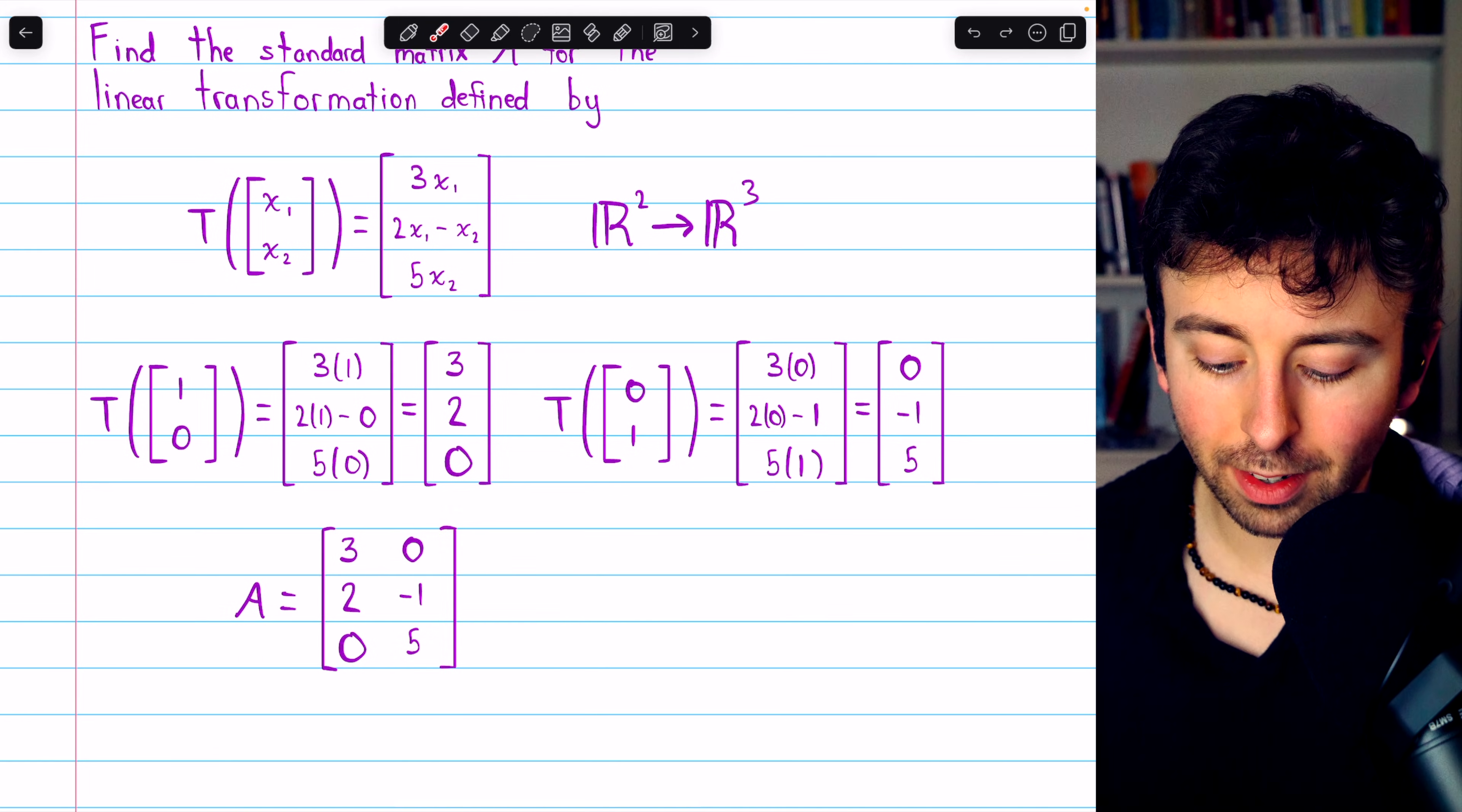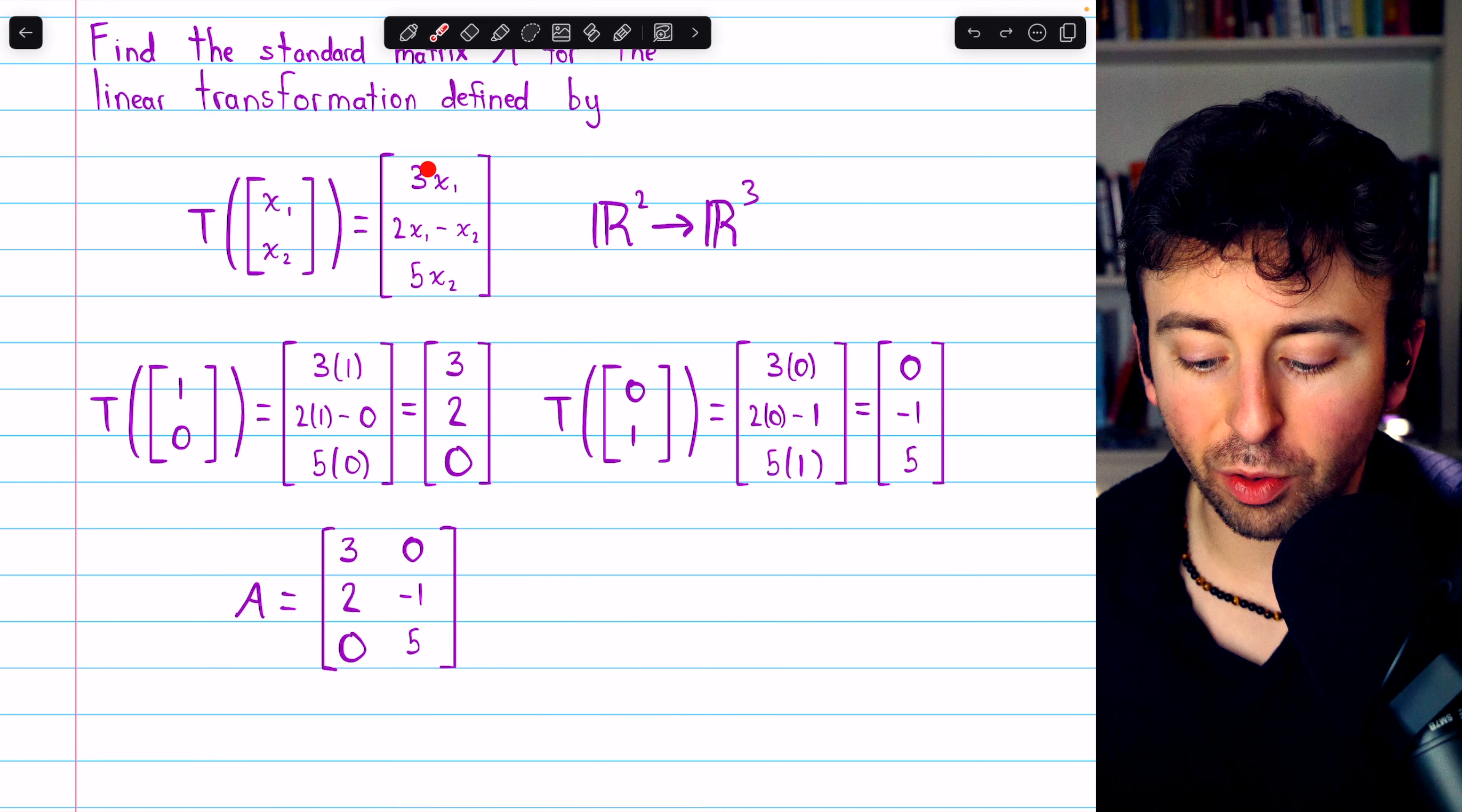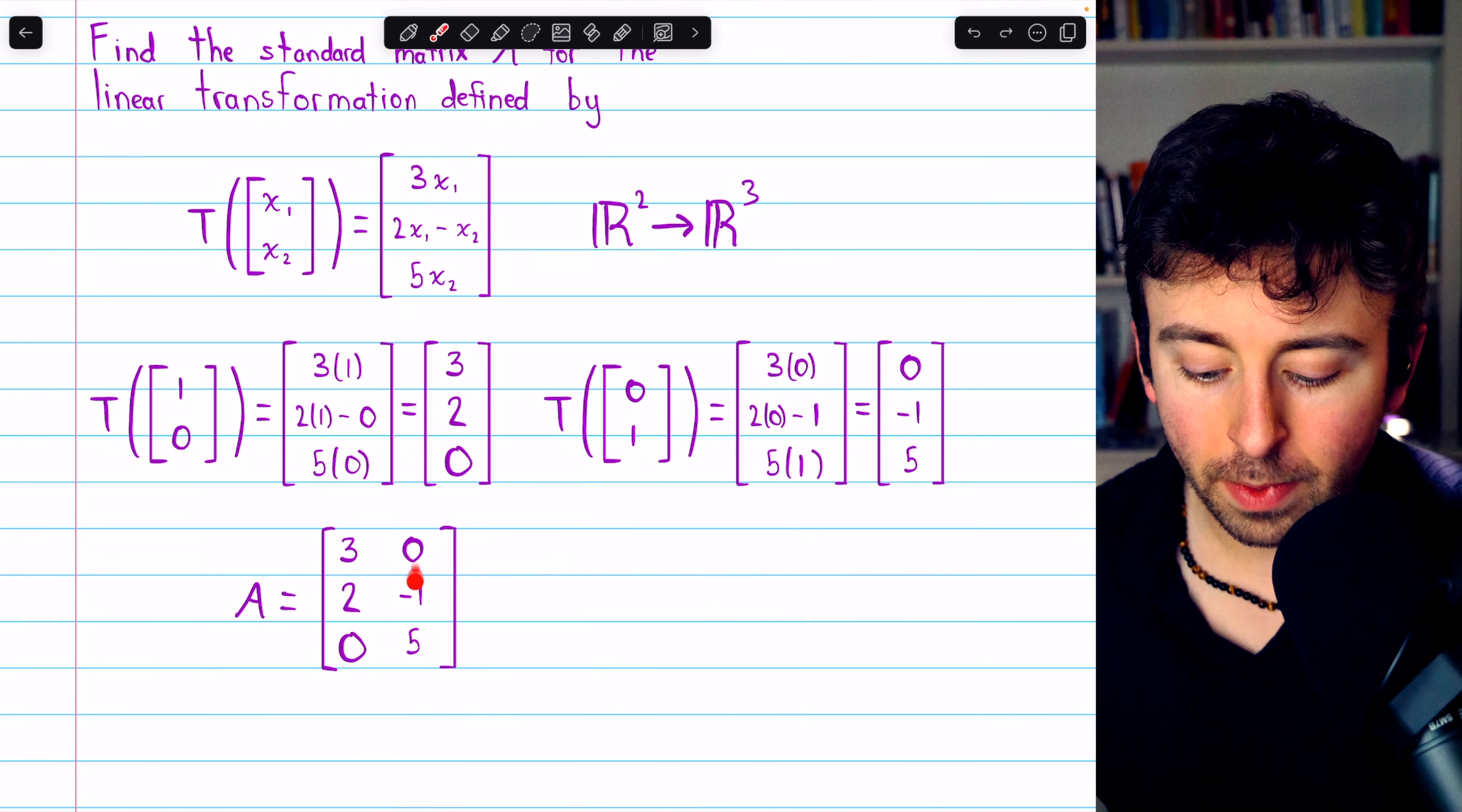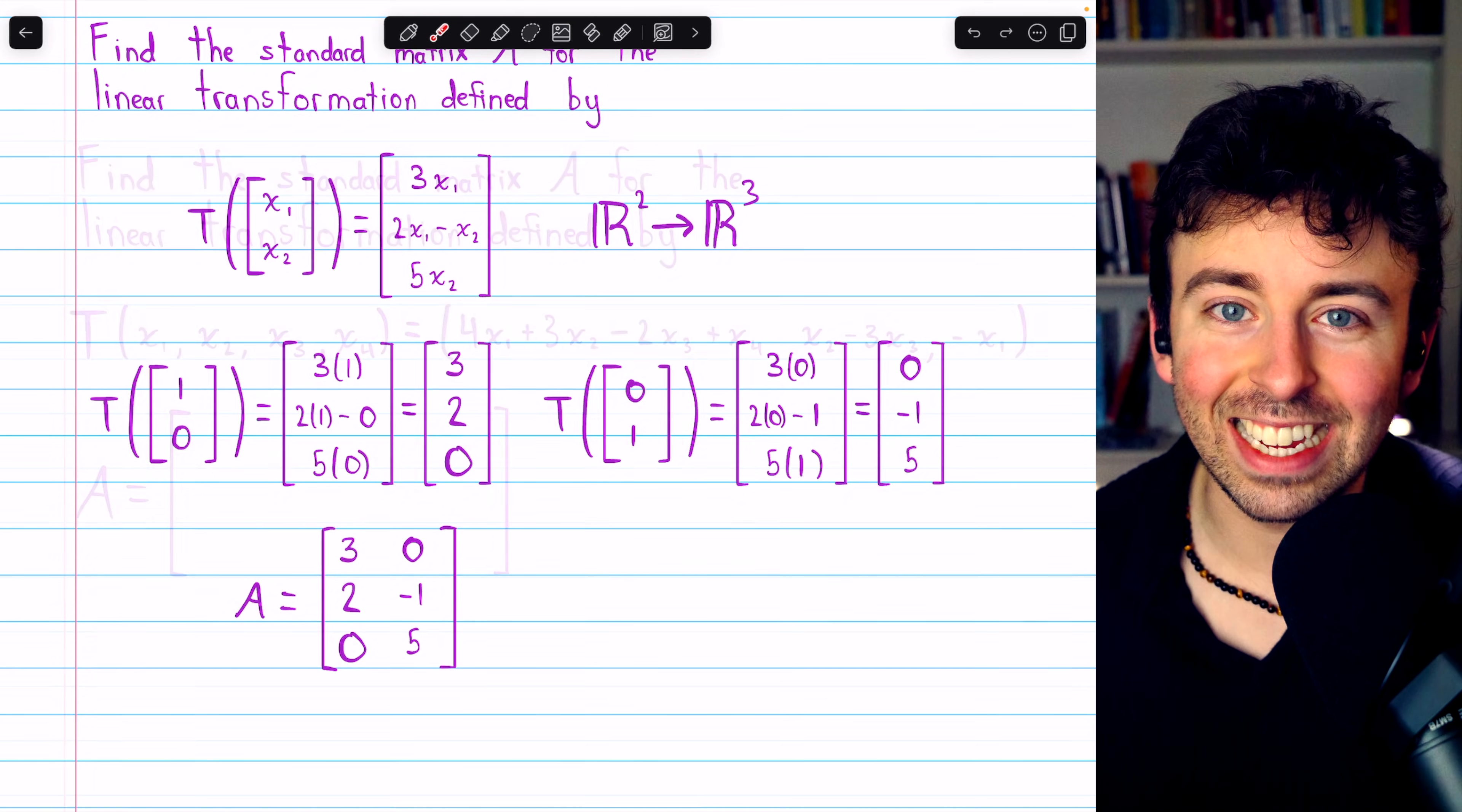The cheat code to do this very quickly is to note that the entries in column 1 are just the coefficients of x1 in the transformation equation: 3, 2, 0. Similarly, the entries in the second column are just the coefficients of x2 in the transformation equation, so 0 because there's no x2 term, negative 1, and 5. So this is actually really easy.